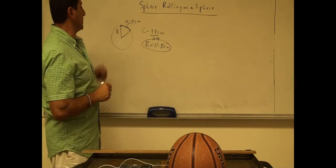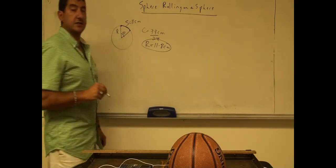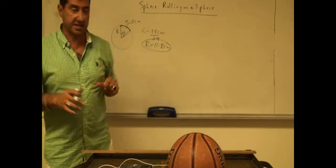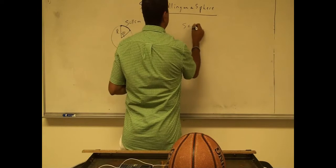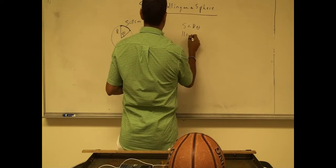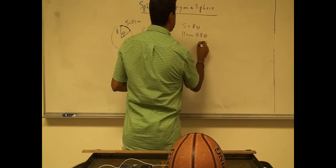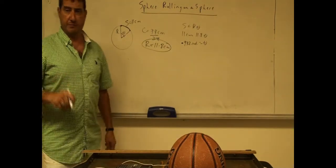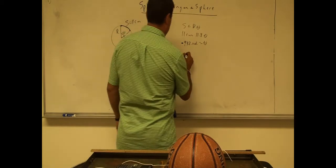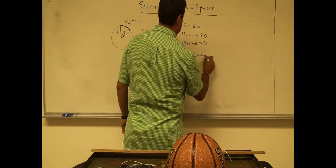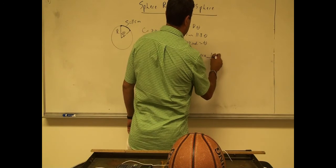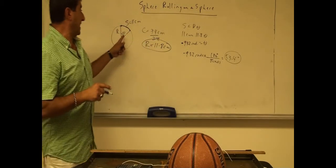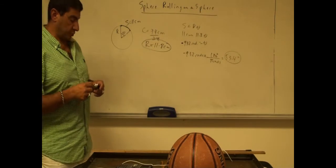So what I can say is: how many radians does that subtend? That's going to give me the experimental angle at which the solid ball left the basketball. S = Rθ, so S is 11 centimeters and R is 11.8, so theta is approximately 1 radian — a little bit less than 1 radian. That's 0.932 radians, and since π radians is 180 degrees, the experimental angle at which the sphere left the basketball was 53.4 degrees.